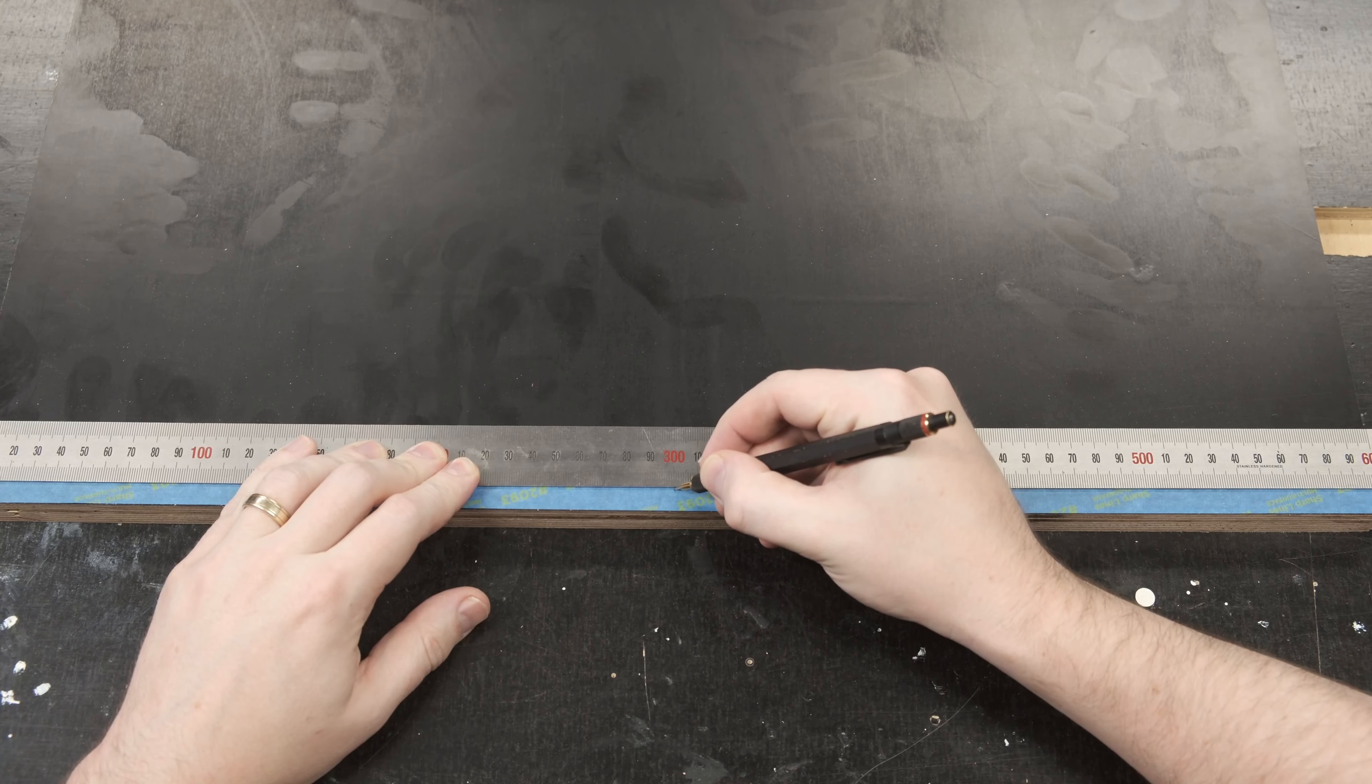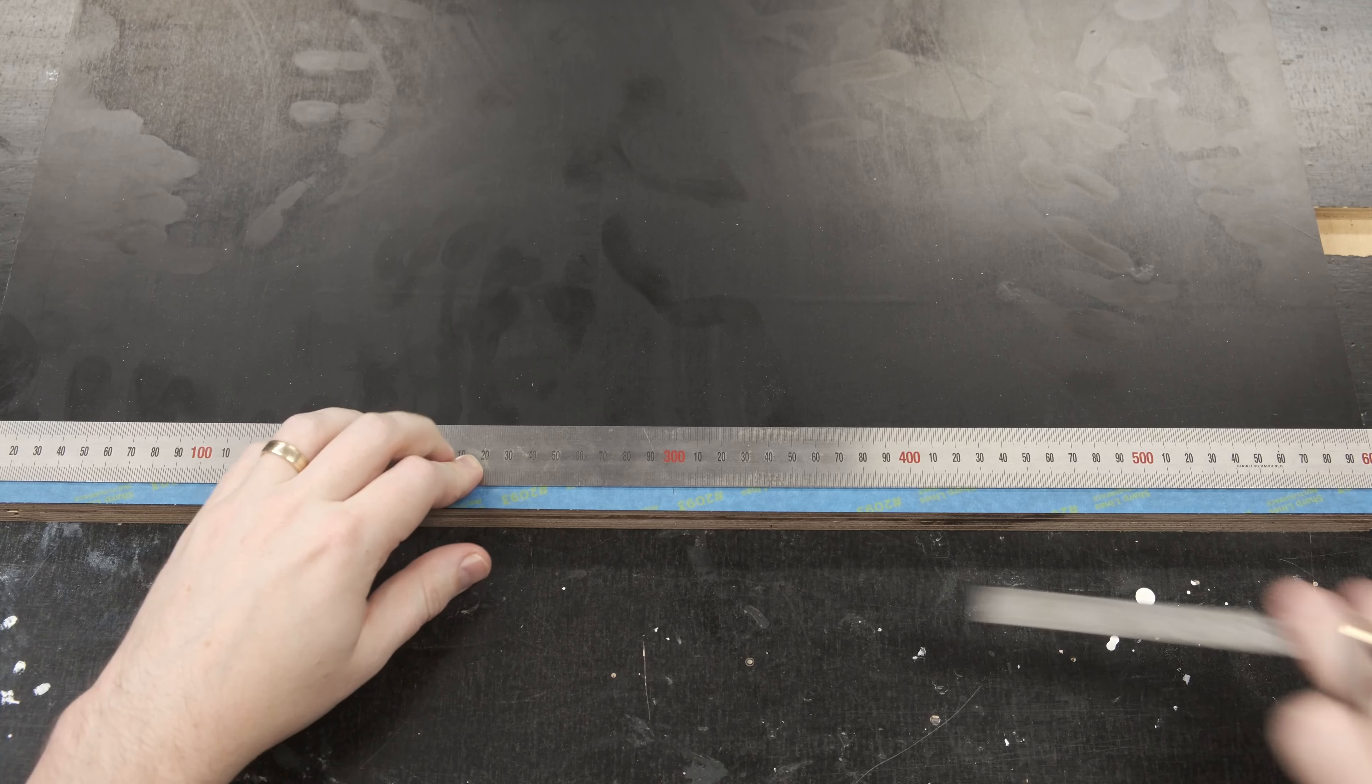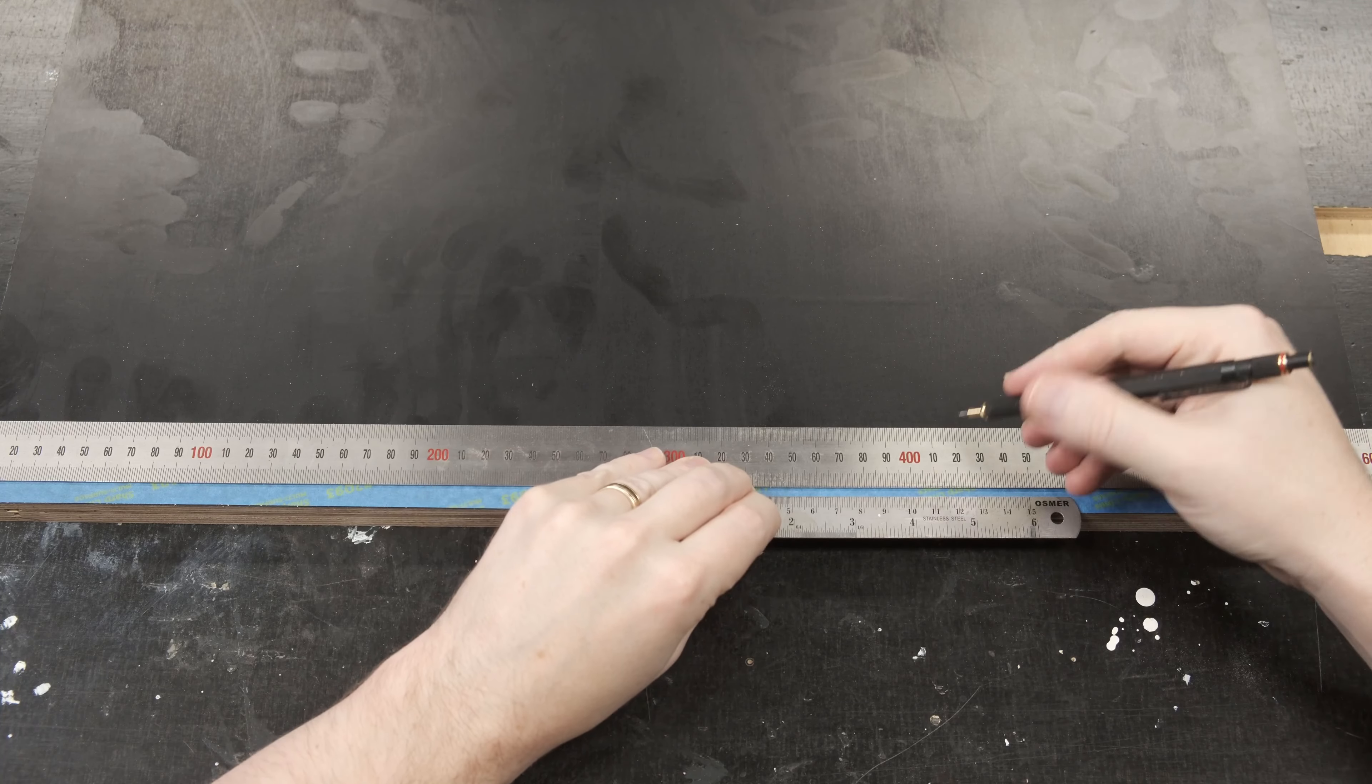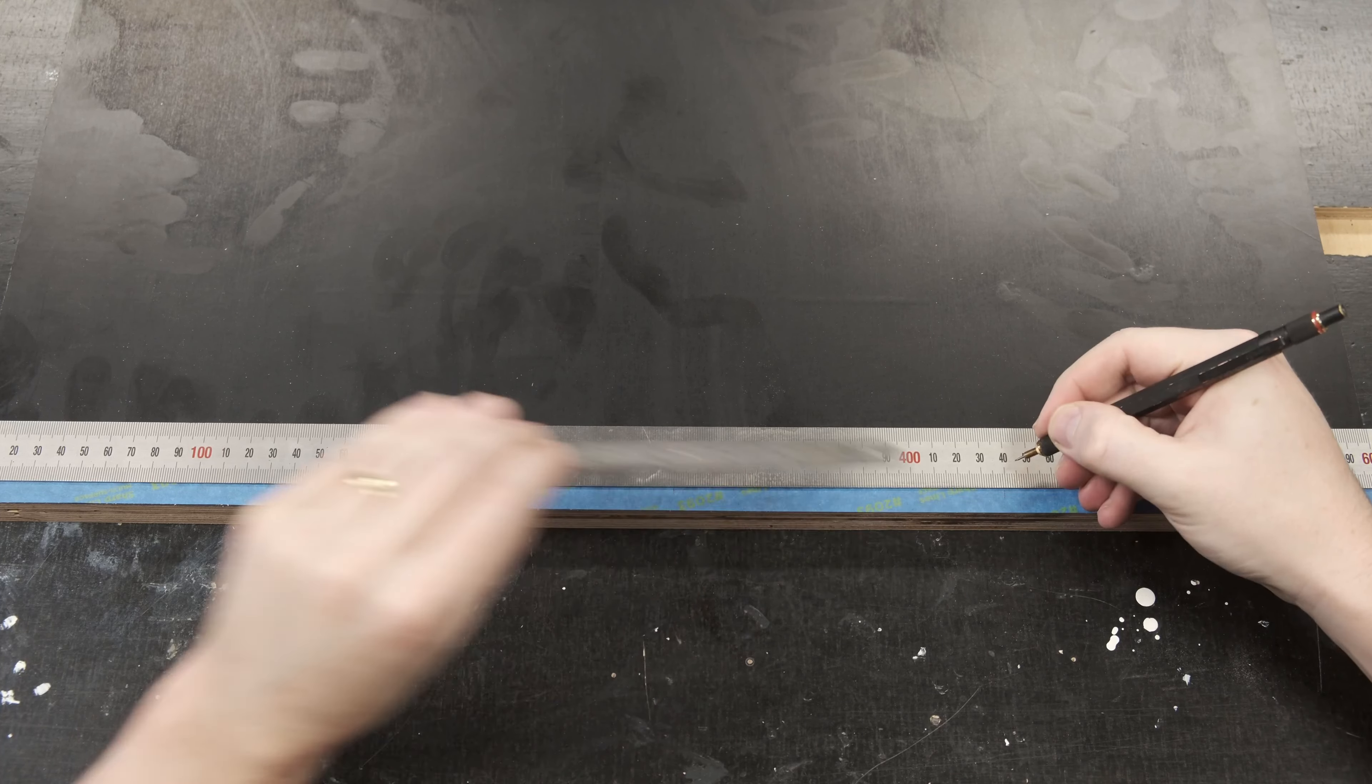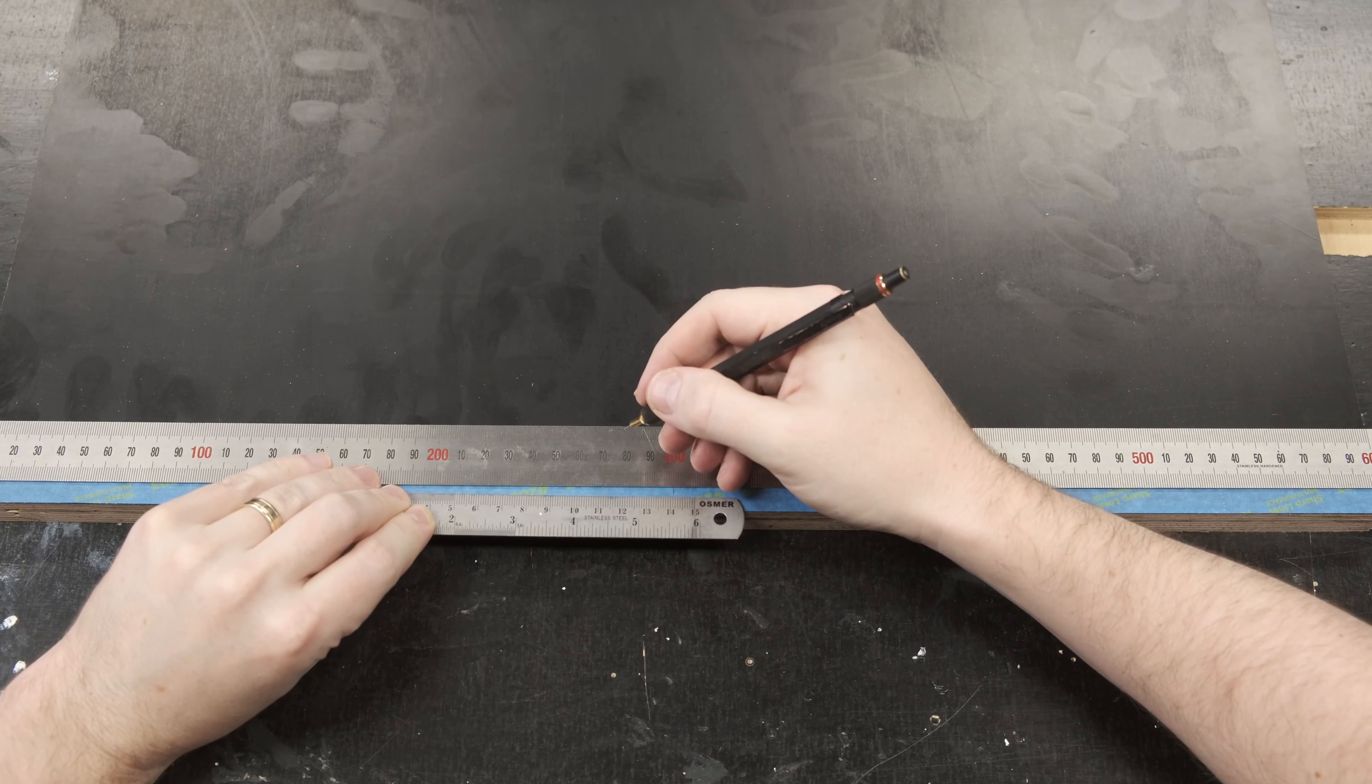Likewise when you're positioning the T-track you must get that exactly in the right position. There should be no grey area where it will or won't hold because I mean what's even the point then.